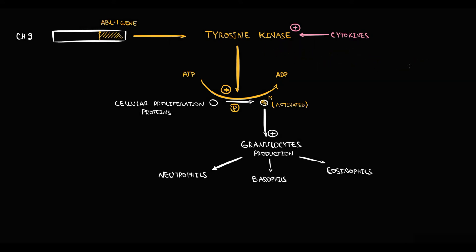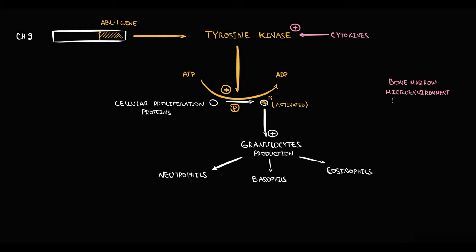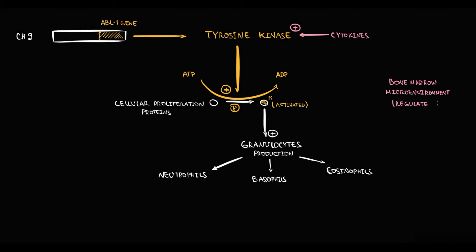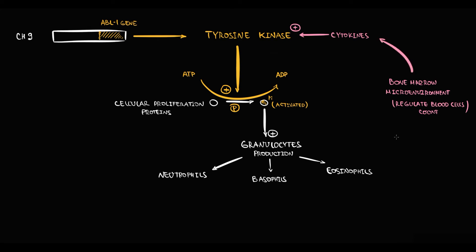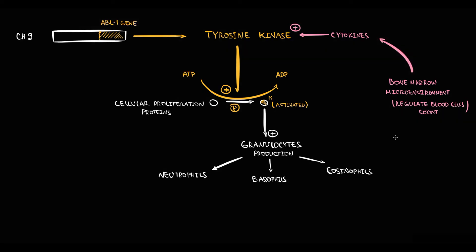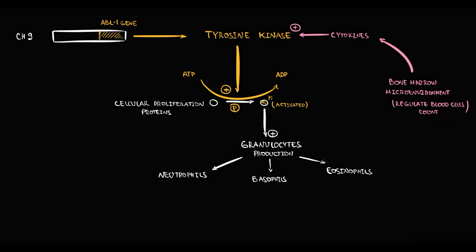The engineers here are the cells that compose the very complex structure called the bone marrow microenvironment. These cells are really smart — they are located in the bone marrow and by the secretion of cytokines they regulate the amount of cells in the blood, including the amount of granulocytes. Cells from the bone marrow microenvironment cannot act directly; they secrete cytokines in the hope that tyrosine kinase will receive this signal and provide an adequate response. For example, when the amount of neutrophils in the blood decreases...